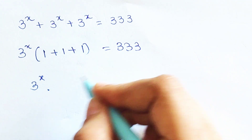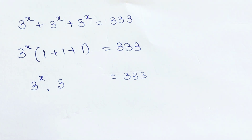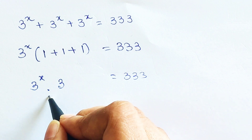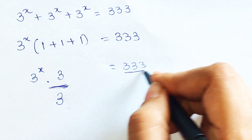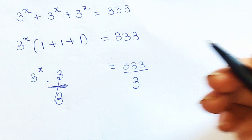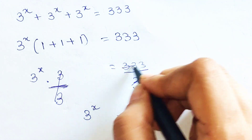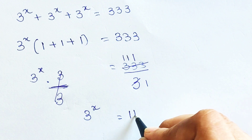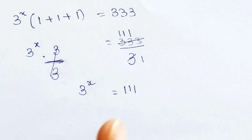So this becomes 3 raised to x into 3, which equals 3 raised to 33. Now in order to find the value of x, we keep the variable on one side. We divide both sides by 3 — this will cancel — and here you will be left with 3 raised to x equals 111.